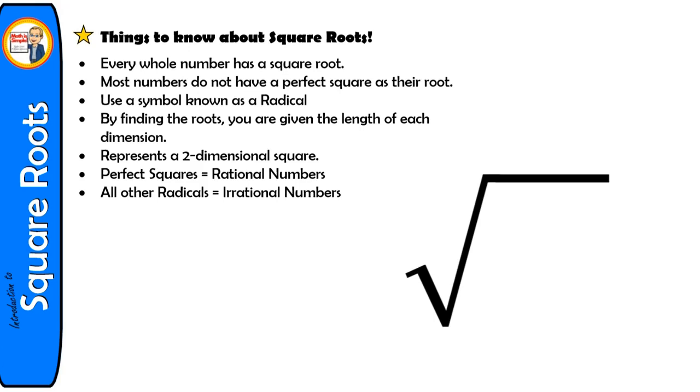The symbol for a square root is also known as a radical. This tells us it has a mathematical root. By finding these roots, you are given the length of each dimension. We normally don't see a 2 placed on the radical in this way—it's kind of like an imaginary 2.